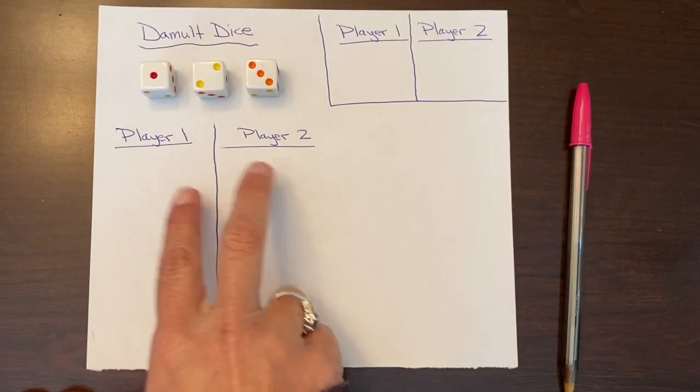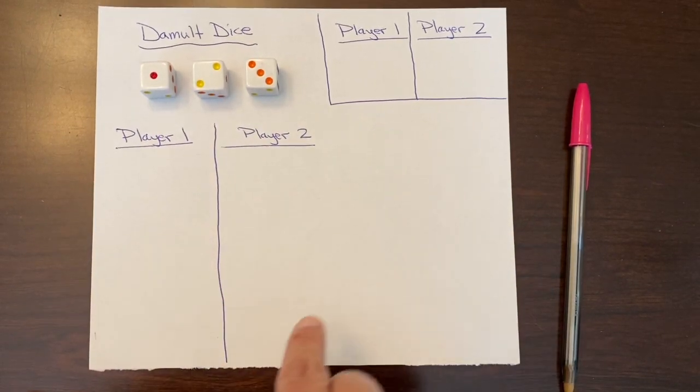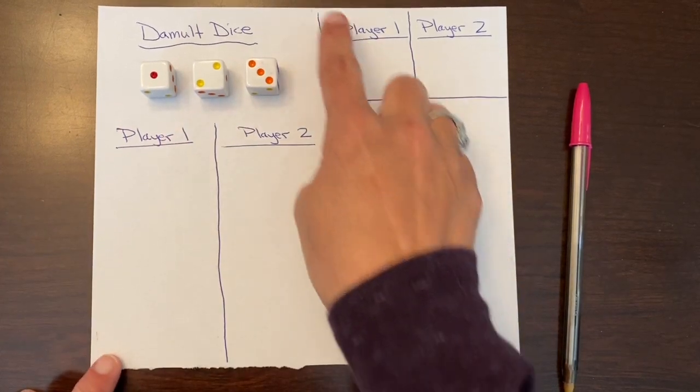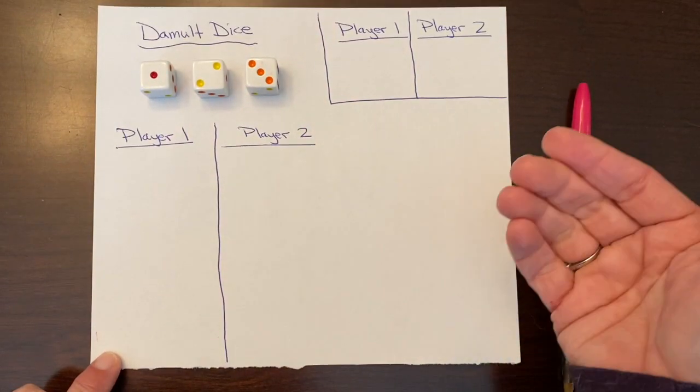Our game is a two-player game, however Demolt Dice can be two to four players. You are going to use three dice and then you can decide how many points you want to be the winner.